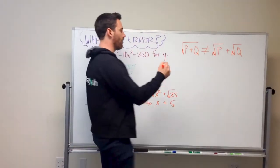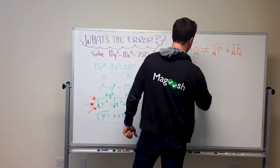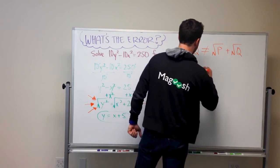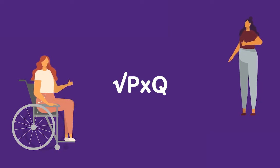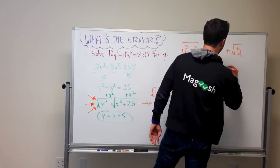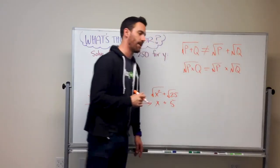It does work, however, if you have p times q and put that under a square root. Then you can take the square root of each item that is there.